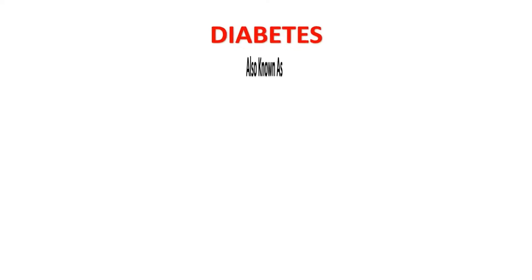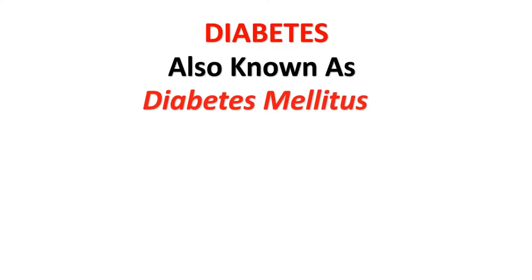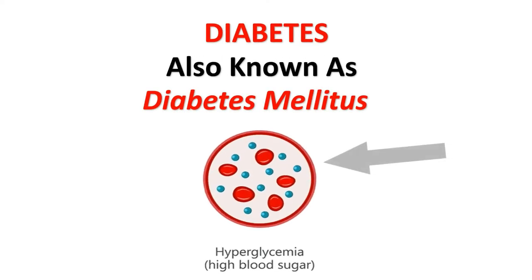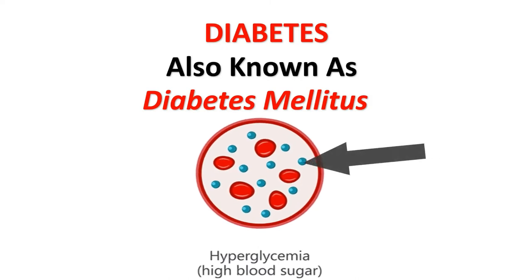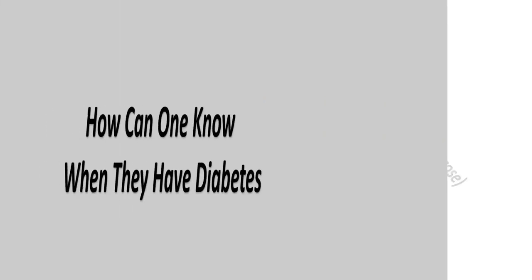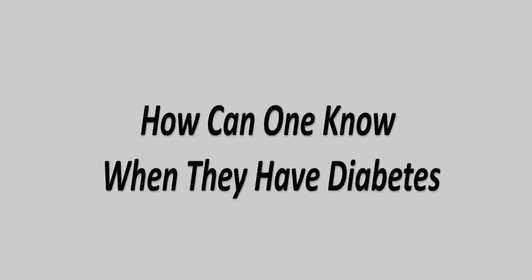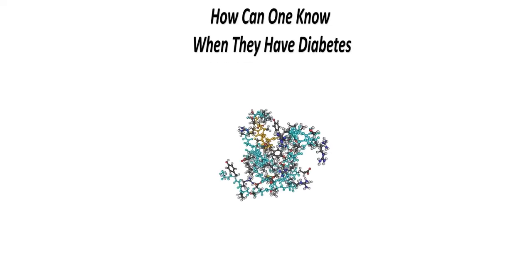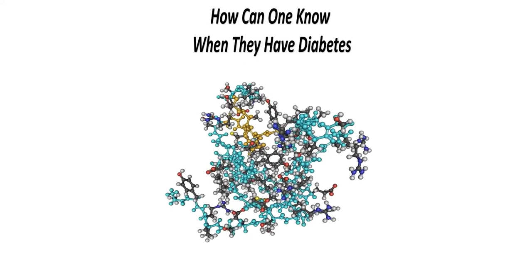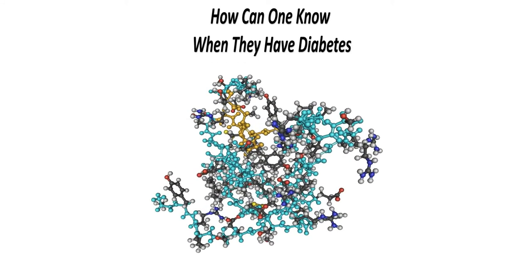Diabetes, also known as diabetes mellitus, is a group of diseases that result in too much sugar in the blood. When you have diabetes, your body doesn't make enough insulin, or it can't use the insulin it makes.